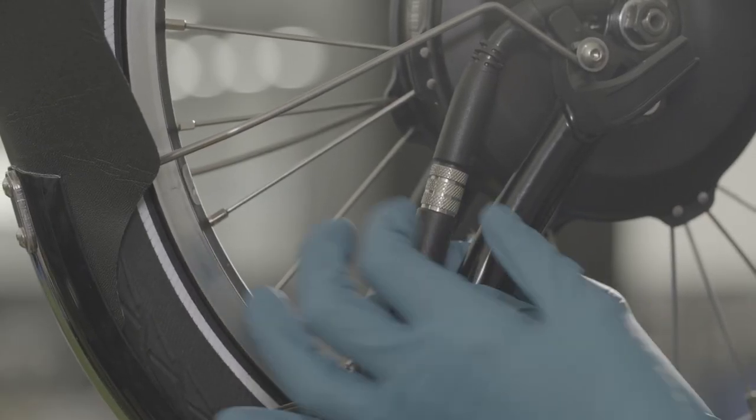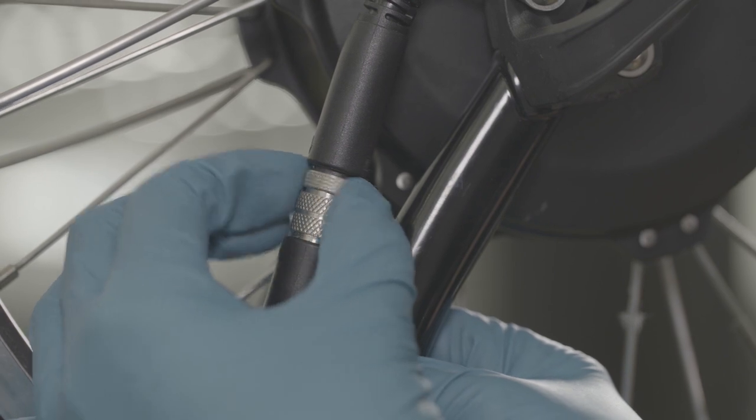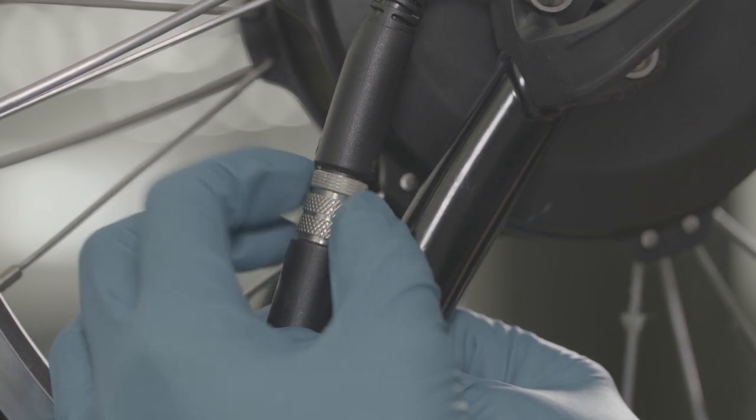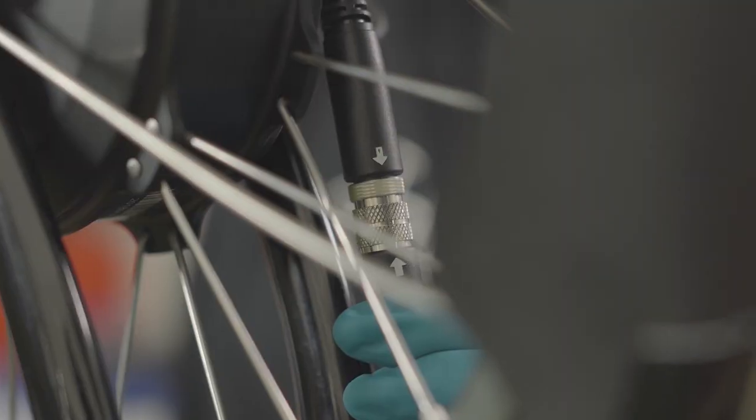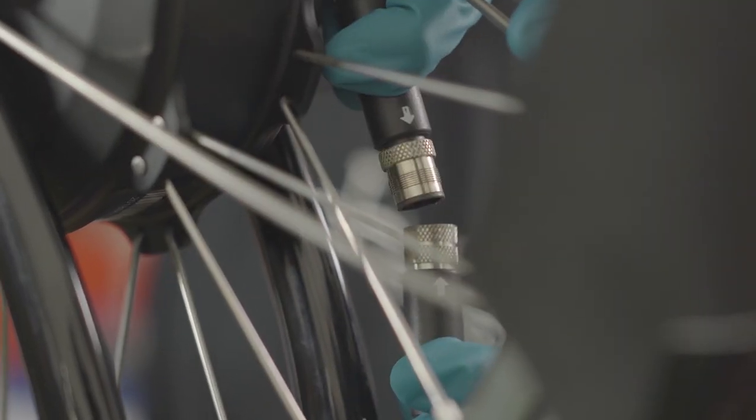Disconnect the motor cable from the controller. To do so, unscrew the metal section of the metal threaded connector closest to the motor. Once this is loose, carefully pull the two sides apart.